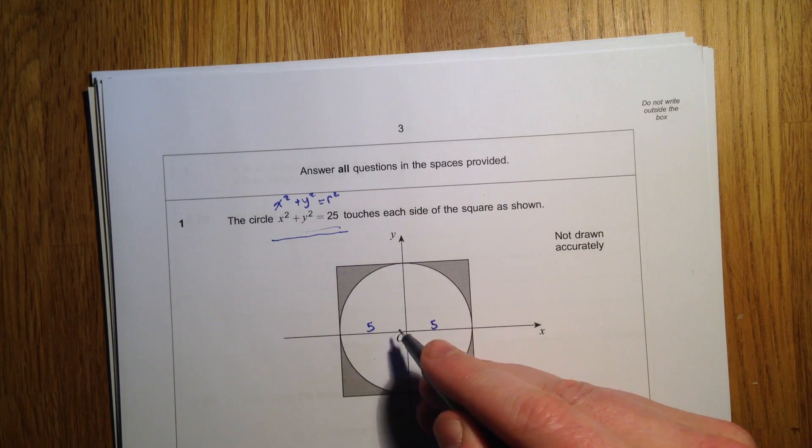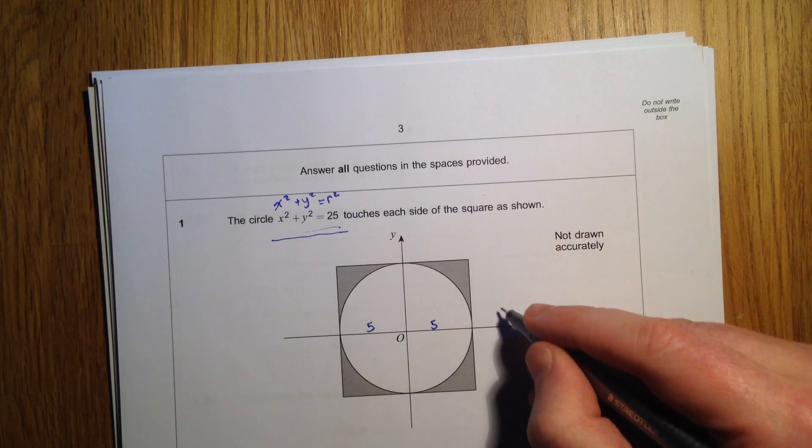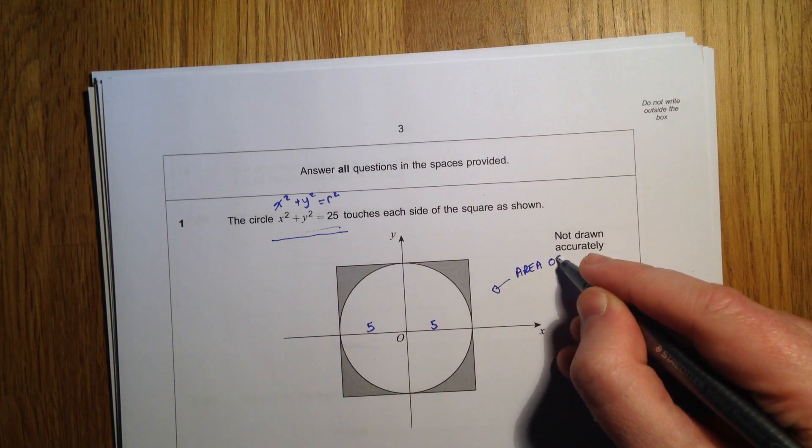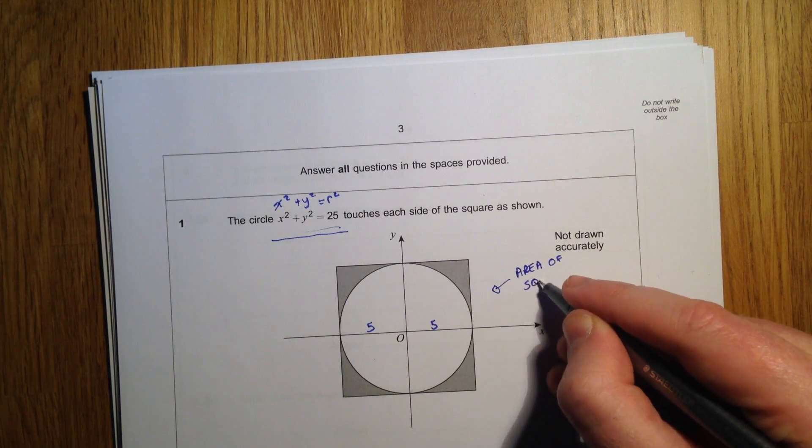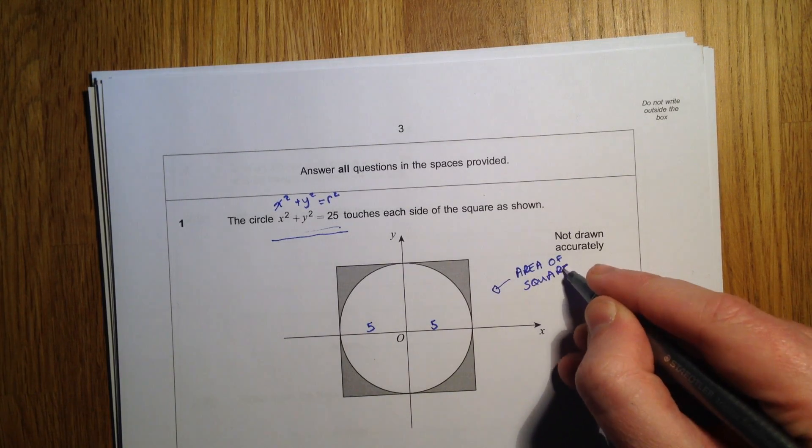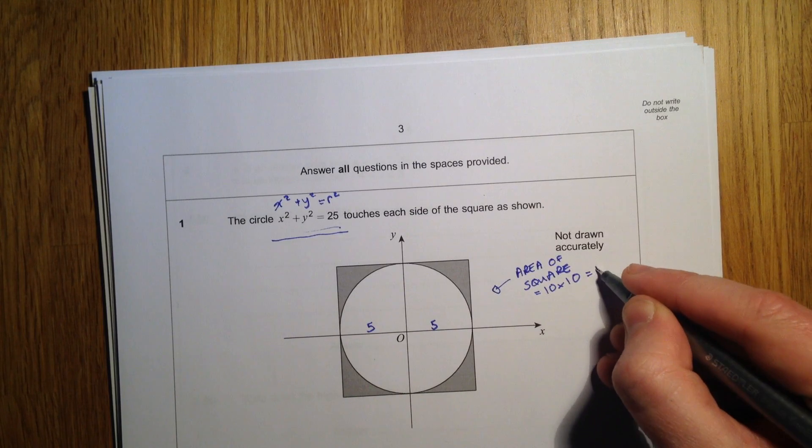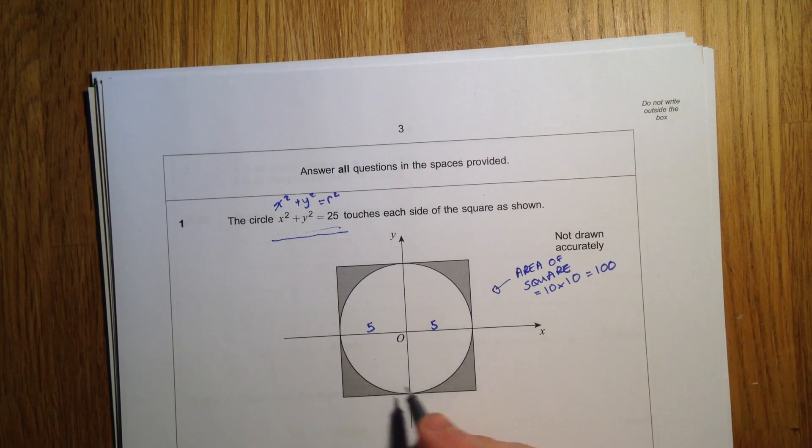I've put 5 over here as well. Now the area of the square is then 10 times 10, which is 100, this being 10.